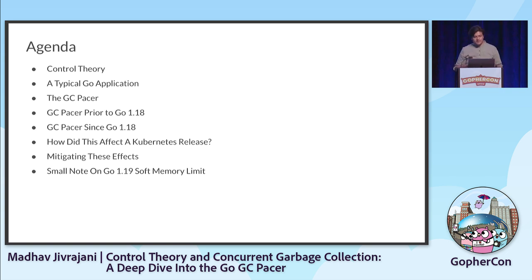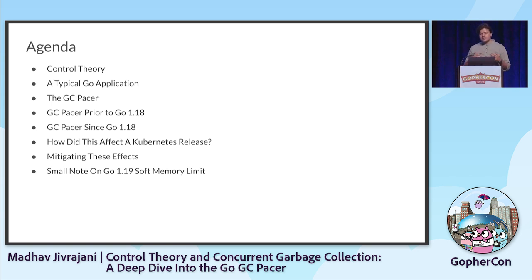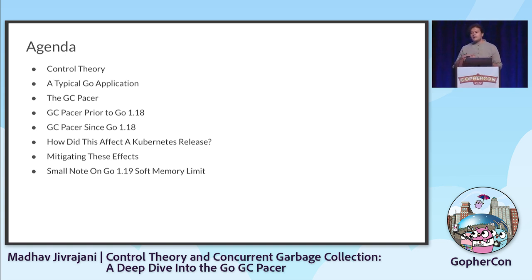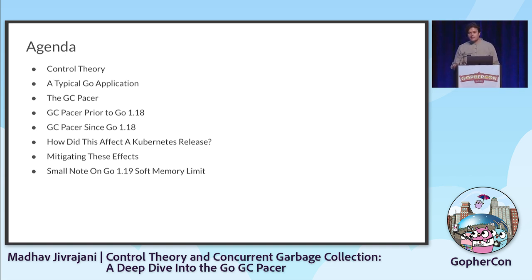A brief overview of our agenda today: we'll do a quick introduction of what control theory is, then take a look at what a typical Go application looks like, then introduce the GC Pacer, which we'll be diving deep into. We'll look at what the GC Pacer looked like prior to Go 1.18, how the redesign was done, why it was done, its effects, how this change affected a Kubernetes release, and finally a note on the Go 1.19 soft memory limit feature.